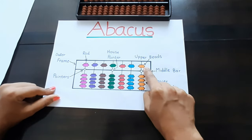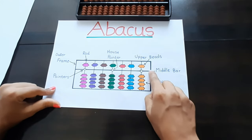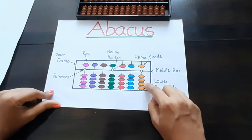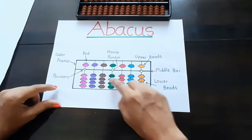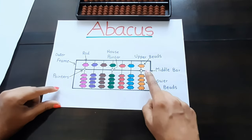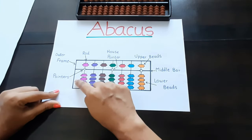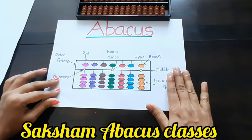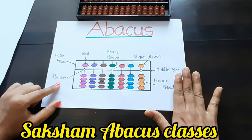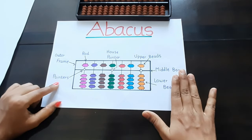This is the middle bar, these are lower beads, and the remaining white points are called pointers. So this is our abacus tool with names. Thank you.